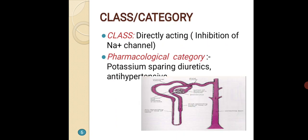Let's see the class and categories. Amiloride is a diuretic acting by direct inhibition of sodium channels. Its pharmacological category is specifically potassium-sparing diuretics, and it is also used as an antihypertensive agent.